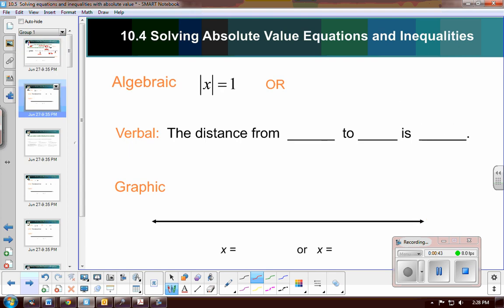So let's look at an example. So we have the absolute value of x equals 1. Or again, that can be written as the absolute value of x minus 0 equals 1. So if I'm to say that in a verbal description, the distance from 0 to x, my solution, is 1 unit.